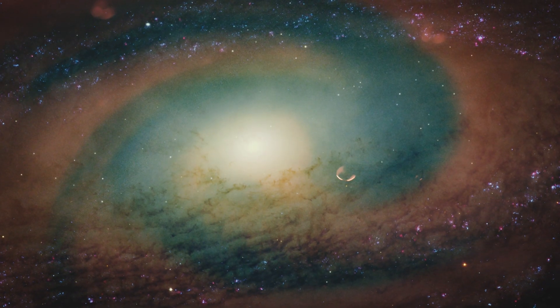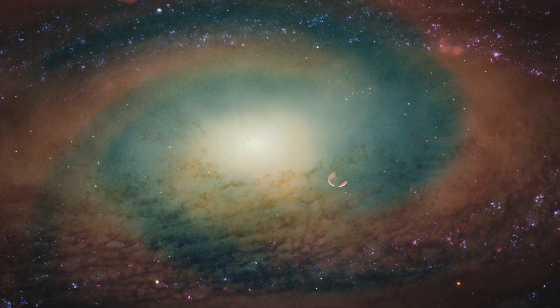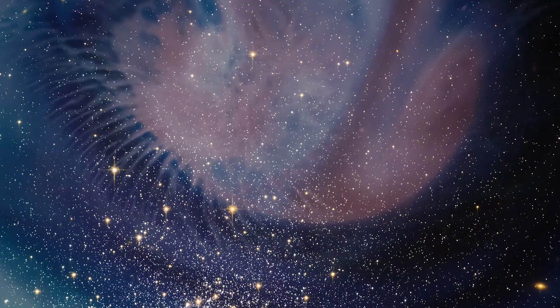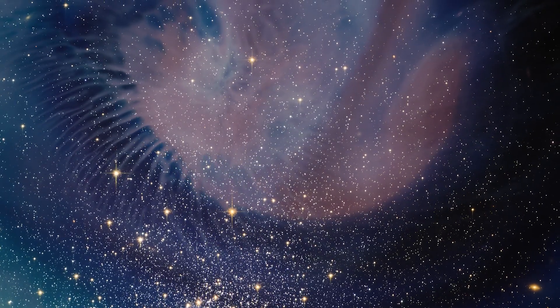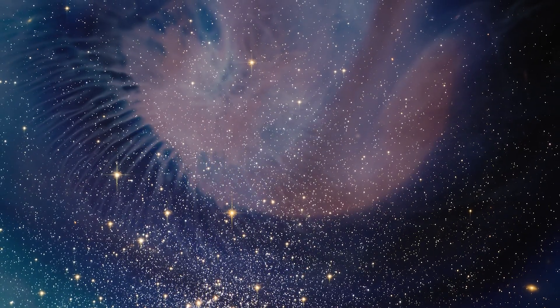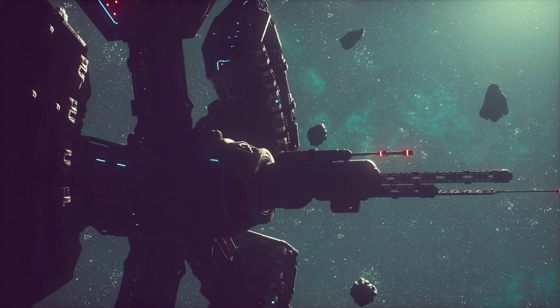It's made even stranger by the fact that these galaxies are showing ordered spin, many twirling in the same direction. That challenges the idea that the early universe was chaotic. It hints that something orderly or planned seeded our cosmos. And yet, where are the civilizations we expected?